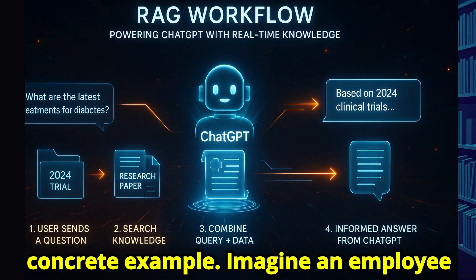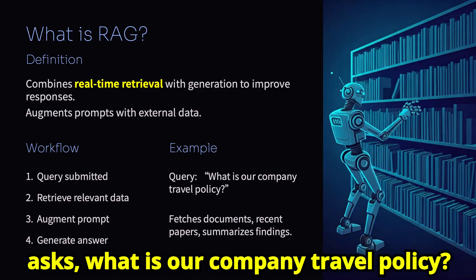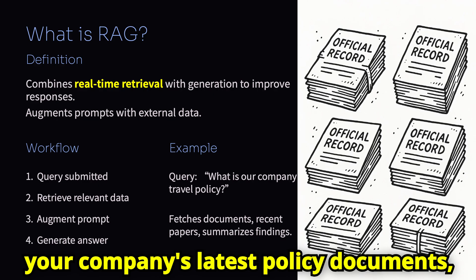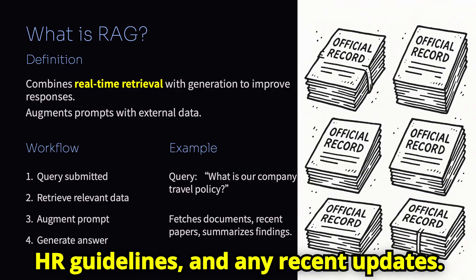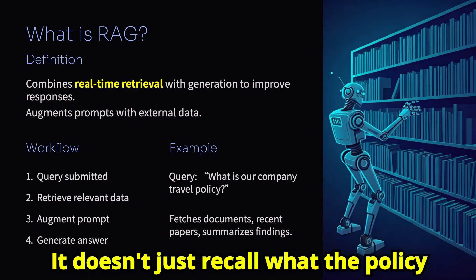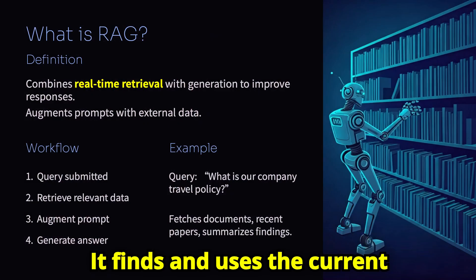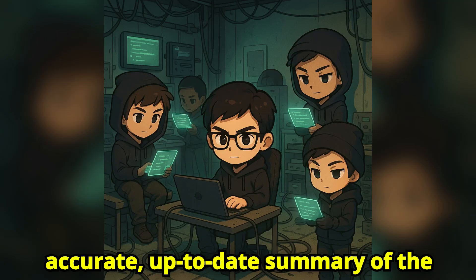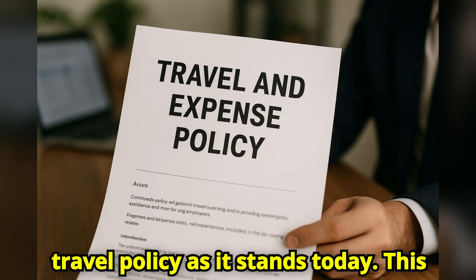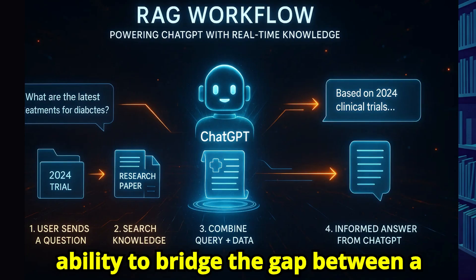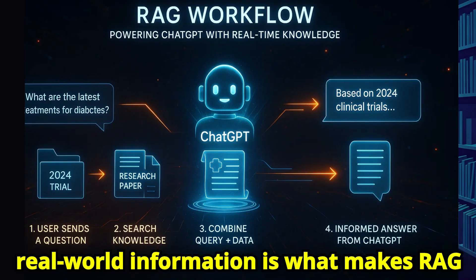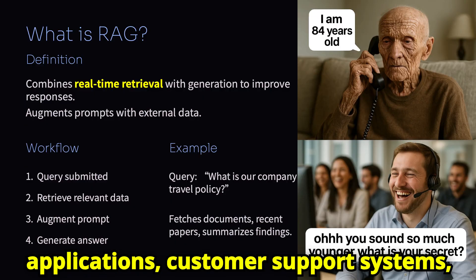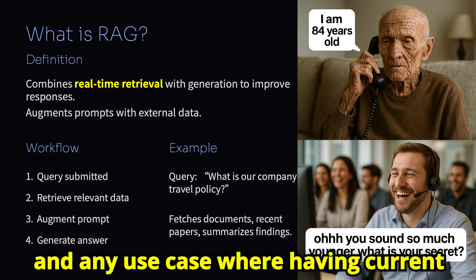Let me give you a concrete example. Imagine an employee asks, "What is our company travel policy?" With RAG, the system would search through your company's latest policy documents, HR guidelines, and any recent updates. It doesn't just recall what the policy was during the model's training period — it finds and uses the current information. The model then synthesizes this retrieved data to provide an accurate, up-to-date summary of the travel policy as it stands today. This ability to bridge the gap between a model's static knowledge and dynamic, real-world information is what makes RAG such a valuable tool for enterprise applications, customer support systems, and any use case where having current information is critical.